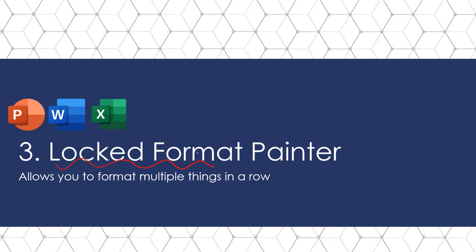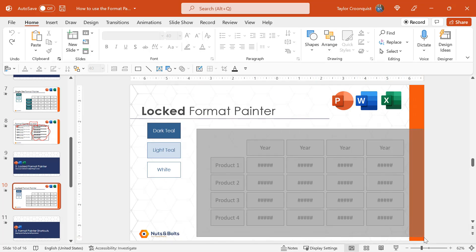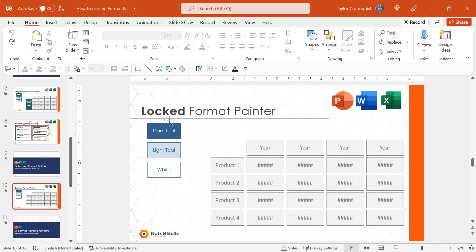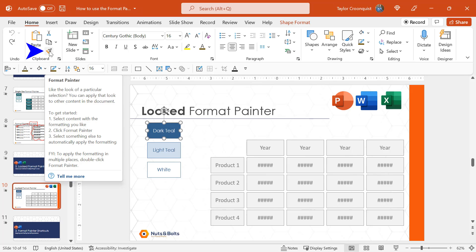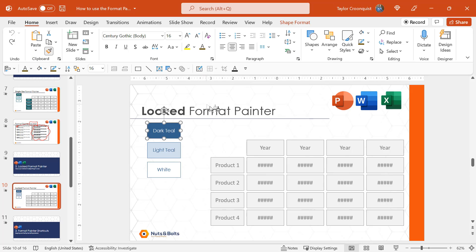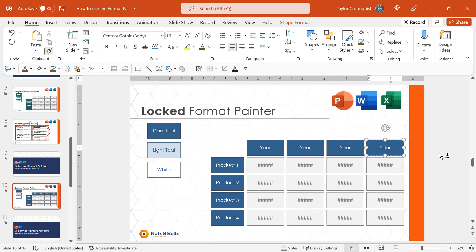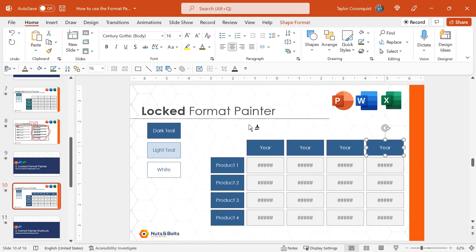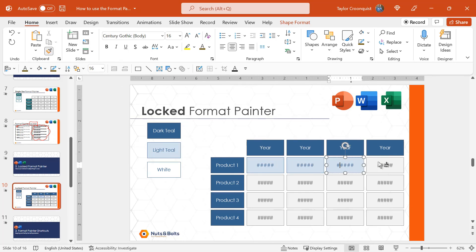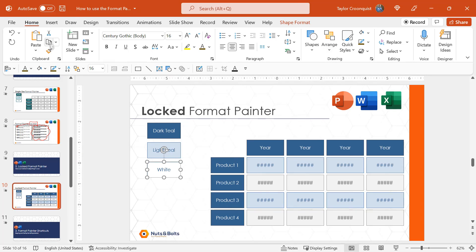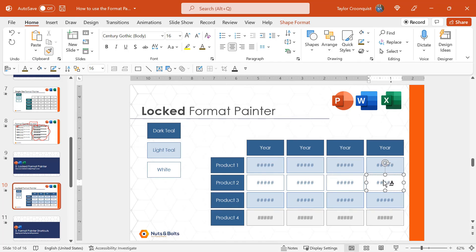Next, let's look at how to lock the Format Painter, which allows us to copy and paste formatting to multiple objects in a row. Back in PowerPoint, I have a grayed out graphic with formatting I want to apply. To use the Locked Format Painter, select the formatting you want to copy, go to the Home tab, and instead of single clicking the Format Painter, double click it — the tooltip says 'to apply formatting to multiple places, double click.' So I'll double click the Format Painter, my icon becomes a paintbrush, and I can click through the graphic and apply that dark teal formatting to all my objects at once. When done, I simply hit Escape and my cursor becomes an arrow again.